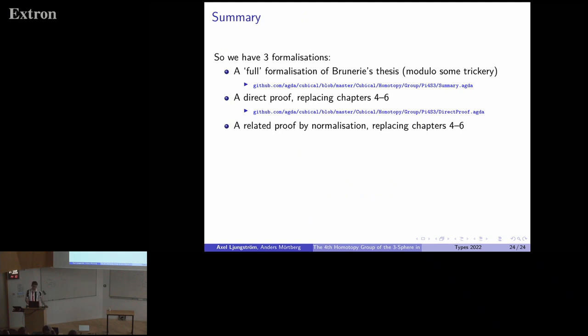We have three formalizations. First, the one I actually came here to talk about, the full formalization of Guillaume's thesis. We have a direct proof of the fact that beta is actually minus two, and this direct proof actually gave us a proof by computation or proof by normalization of the fact that beta is minus two. So we actually have three proofs. The two last ones are sort of the same, but kind of three proofs. Questions?